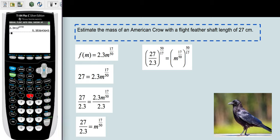Over here on the calculator, we'll use parentheses. 27 divided by 2.3. Close those parentheses. Raise that entire quantity to 50/17ths.